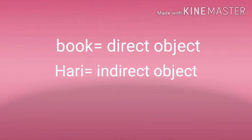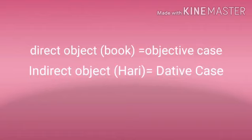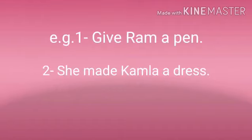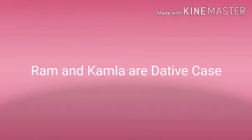The direct object is something without life, and the indirect object is something with life — like Harry, who is the indirect object, while book is the direct object because a book has no life. The direct object 'book' is in the objective case, and the indirect object 'Harry' is in the dative case. Other examples: 'Give Ram a pen' and 'She made Kamala a dress' — Ram and Kamala are both in the dative case.